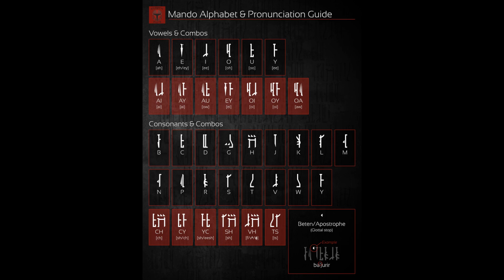So then we have the consonant combinations, which are like the vowel combinations in that they change sound, although not necessarily by merging into one — though there is one that is that. We have C-H, which is CH. And then S-H, which is SH. And then C-Y can make an SH or a CH sound — it's usually an SH though. And Y-C can make an SH sound as well.